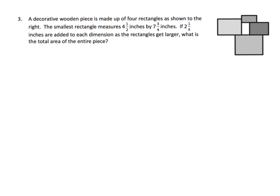A decorative wooden piece is made up of four rectangles. It's kind of like a donut hole — one rectangle isn't really there. The smallest rectangle measures four and a half by seven and three-quarters. And if two and a quarter inches are added to each dimension to make the next larger one, we keep adding to get each next larger rectangle. Then they want to know the area of the entire thing.